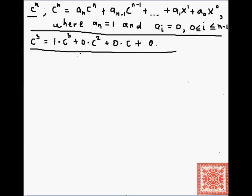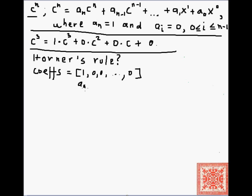Here's an example of c to the third, and the question is: can we apply Horner's Rule? And the answer is yes, we can. We can get the coefficients. This is a_n, the first coefficient, which is equal to 1, and then the last coefficient is a_0. All of the coefficients except a_n are equal to zero. And we can apply our standard Horner's Rule algorithm discussed in the previous two screencasts.